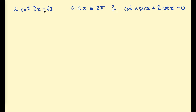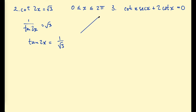The next problem says cotangent of 2x equals √3. All you really need to remember is that cotangent is 1 over tan. So we write this as 1 over tan(2x) equals √3, then rearrange to get tan(2x) equals 1 over √3. For the exact value, we use the 1-2-√3 triangle. Tan is opposite over adjacent, so we want the angle opposite the smaller side — that's π/6. Our reference angle is π/6.